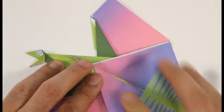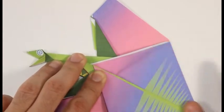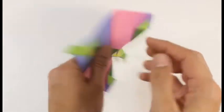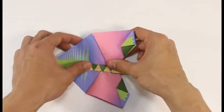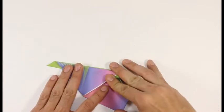Fold the wing down parallel to the bottom of the body. Turn over. Fold the other wing down to match.